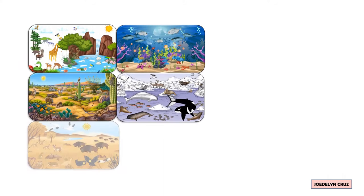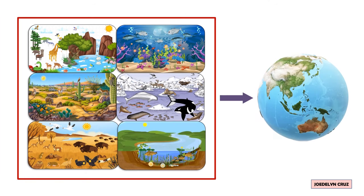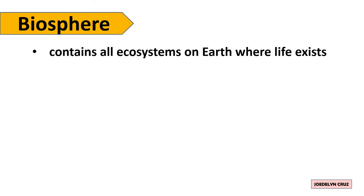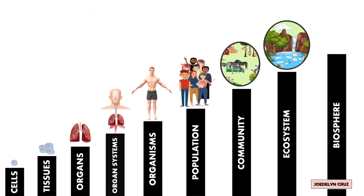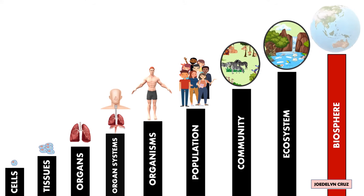And the sum of all ecosystems is Biosphere. Biosphere contains all ecosystems on Earth where life exists. It is the sphere of life. So, the highest level of biological system is biosphere.